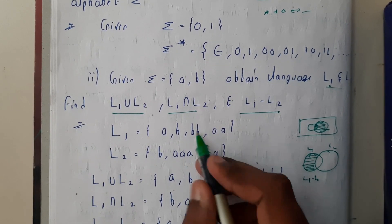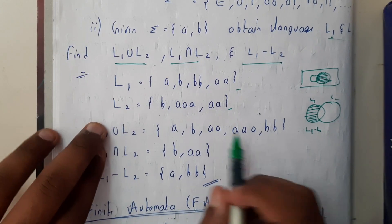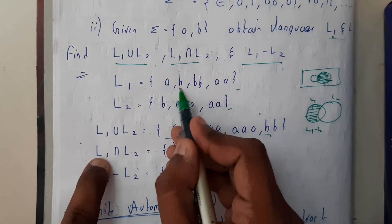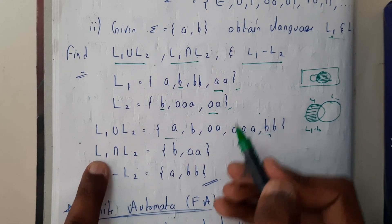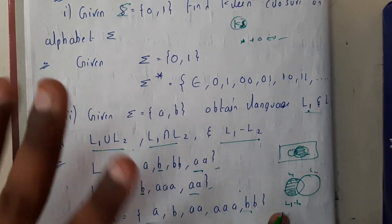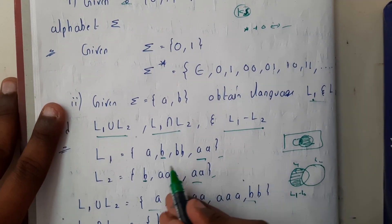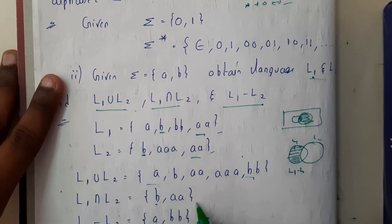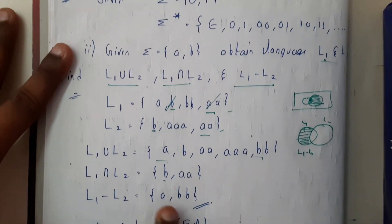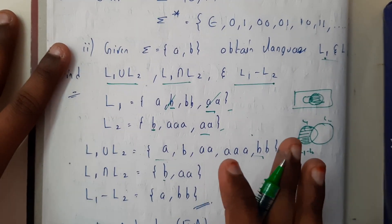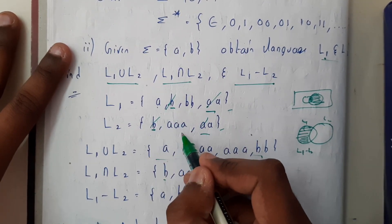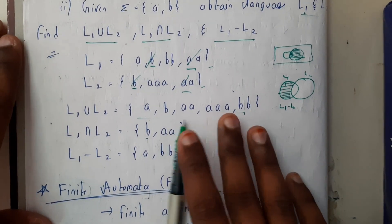For subtraction, L1 minus L2 means you remove the intersection from L1. Union gives all elements; intersection gives the common ones — here b and aa are common. For L1 minus L2, here is a quick trick: take the union result, cancel out b and aa, and what is left in L1 only is your answer. Don't include a, b, bb, or aaa in the result.